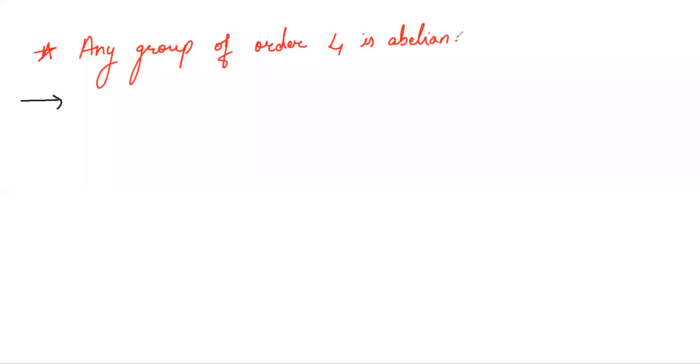Hello friends. In this video, we prove that any group of order 4 is abelian. Let G be the group such that order of G is 4.